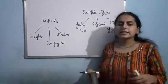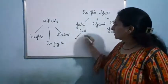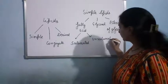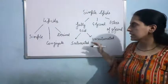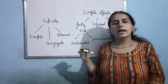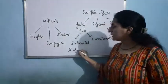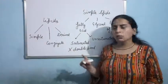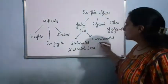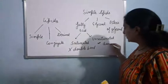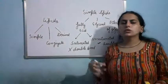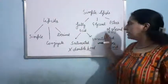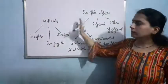Fatty acids are further classified into two classes: saturated fatty acids and unsaturated fatty acids. In saturated fatty acids, the double bond is absent — only single bond is present. Palmitic acid is a saturated compound. But in case of unsaturated, double bond is present. Triple bond is not common in fatty acids. So in saturated, double bond is absent, and in unsaturated, double bond is present.